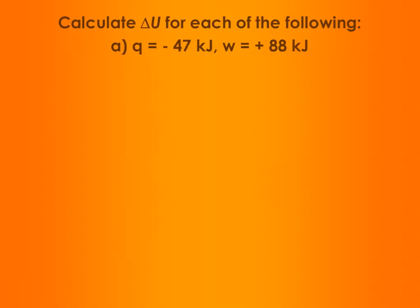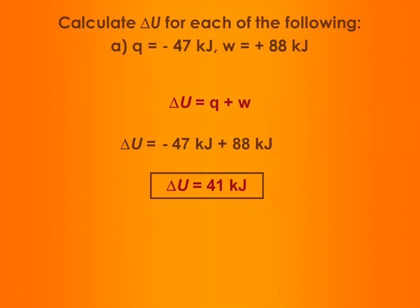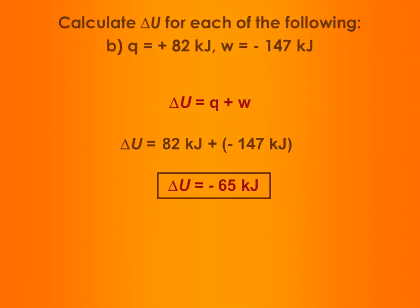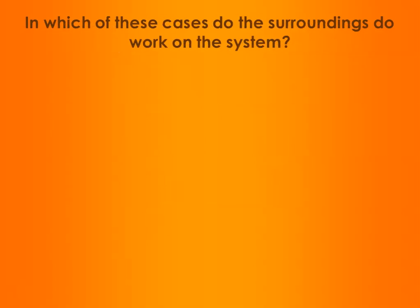For these first two problems, we're just going to calculate delta U, given the signs for Q and W. In case A, Q is negative — that's an exothermic change — and the work term is positive, meaning work is being done to the system. Combining those gives a positive delta U: 41 kilojoules of energy is being provided to the system. In case B, we have an endothermic change where the system is doing work — positive Q and negative W. Adding these together gives a delta U of negative 65 kilojoules, meaning the system is losing energy. The surroundings did work on the system only in case A.